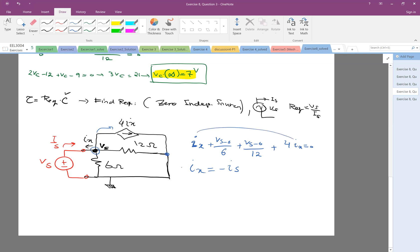Sounds good. Just replace. So here you have five Ix. Five Ix instead of Ix, I put negative Is. Plus Vs over six, plus Vs over 12, equal to zero. So from that, if you do some math, we get five Is equal to Vs times, 2 plus 3, and this is 5 over 12. So 5 times 4, which is 20.